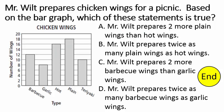Mr. Wilt prepares two more plain wings than hot wings. So I'm going to compare plain versus hot. I go over here, find plain. It says that he's made 18 plain and hot 16. The good news about this question is the very first statement happens to be true. If it was me taking an assessment, I would circle my answer and be done.